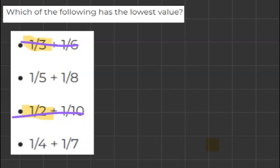So that leaves us with 1 over 5 plus 1 over 8, and 1 over 4 plus 1 over 7. And if I look at these numbers, I can see 1 over 5 is smaller than 1 over 4, and 1 over 8 is smaller than 1 over 7.